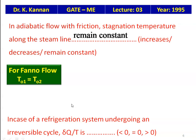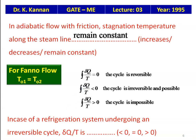In the case of a refrigeration system undergoing a reversible cycle, what is the value of ∮δQ/T? From the Clausius inequality: ∮δQ/T = 0 for a reversible cycle, < 0 for an irreversible but possible cycle, and > 0 for an impossible cycle. For an irreversible refrigeration cycle, ∮δQ/T is less than 0.